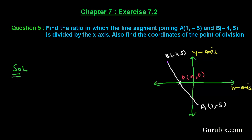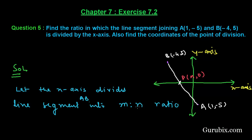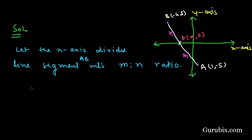We have to find the ratio in which this point P divides the line segment AB. Suppose the x-axis divides the line segment into m:n ratio. Therefore we shall write m here and n here. Now we shall find the y-coordinate of this point P by using the section formula.